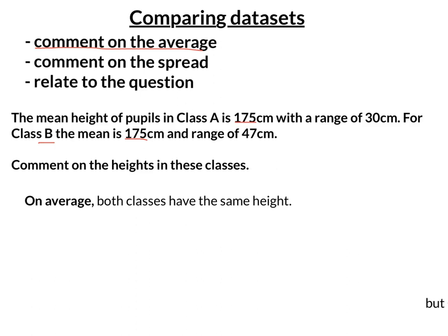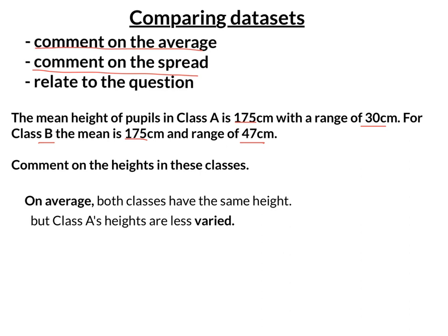The second thing is I comment on the spread. Class A has a range of 30 centimetres while class B has 47 centimetres. Class A's range is smaller, so their heights are less varied. My overall comment is: on average, both classes have the same height, but class A's heights are less varied.